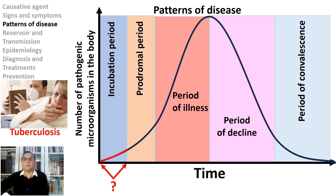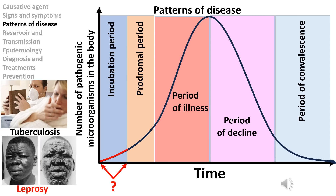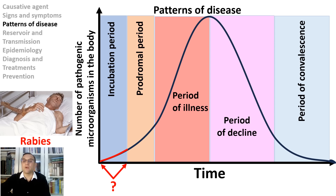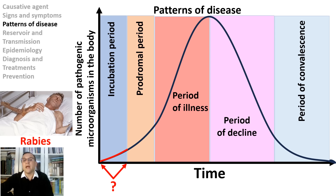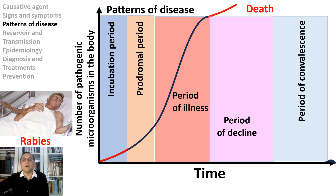How long does it take before signs and symptoms develop after infection? It depends on the type of infection. For TB, it can occur two to three months after infection or years later. For leprosy, there may be no symptoms for up to six years. For rabies, the incubation period depends on how close the bite was to the brain — if bitten in the foot, you have more time to get a rabies shot than if bitten in the face. The rabies virus hides from the immune system, moving through nerves causing nerve damage until it reaches the brain. If left untreated, rabies is nearly always fatal.